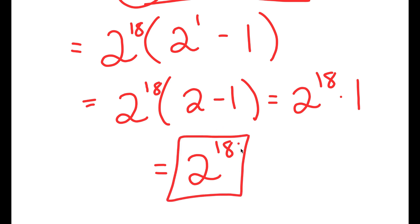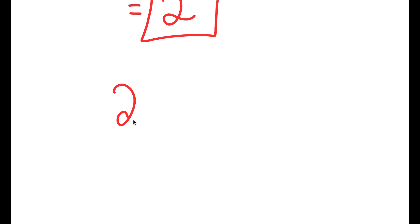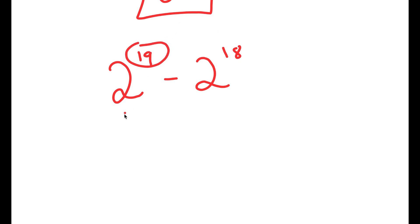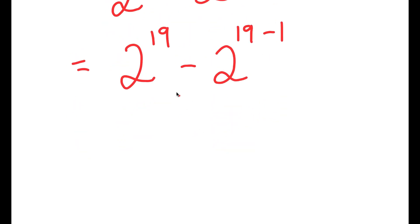Now there is actually another method of solving this problem. Going back, our original problem was 2 to the power of 19 minus 2 to the power of 18. What we did was write 19 as 18 plus 1 and solved it by factoring out 2 to the power of 18. Now, what if instead of rewriting 19, I rewrite 2 to the power of 18 as 2 to the power of 19 minus 1?